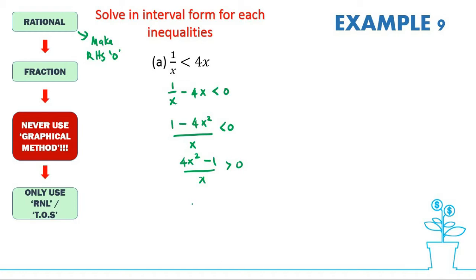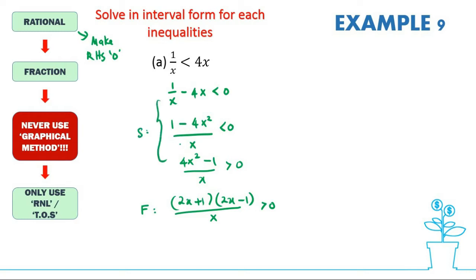Next, factorize. You would have (2x + 1)(2x − 1) over x, greater than zero. So you have 2x + 1 and 2x − 1. From here you have already factorized and simplified. For rational inequalities there are some extra steps at the beginning because you have to simplify — it's a bit more complicated, but that's okay.